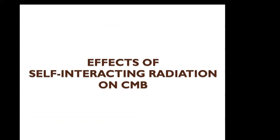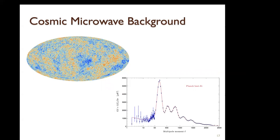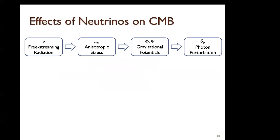Let me briefly review the effects of self-interacting radiation on the CMB power spectrum. To understand interacting radiation, we can first understand the effect of free-streaming radiation. Taking neutrinos as an example, free-streaming neutrinos develop anisotropic stress, which changes the gravitational potentials, which in turn changes the photon perturbation. I'll review this step-by-step.